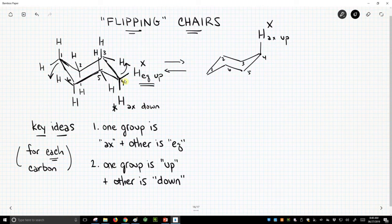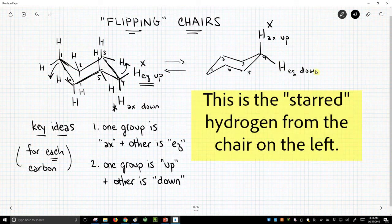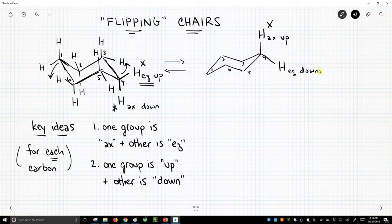What happened to our hydrogen that was axial down? Well, it's still down, so it's oriented down, but it's now equatorial down. So the up and down, when you flip a chair, the groups don't change up and down, but they do reverse axial and equatorial.